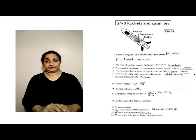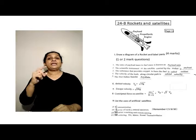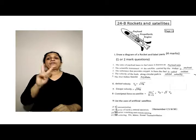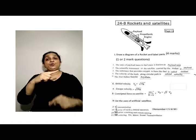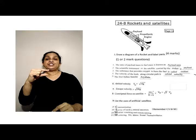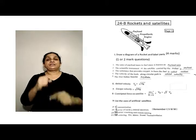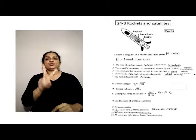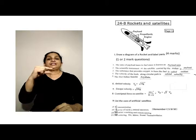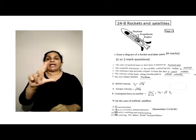Sixth, orbital velocity VO equal to root of RG. Seventh, escape velocity is equal to root 2 RG.